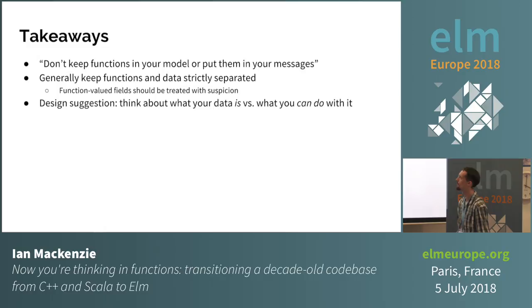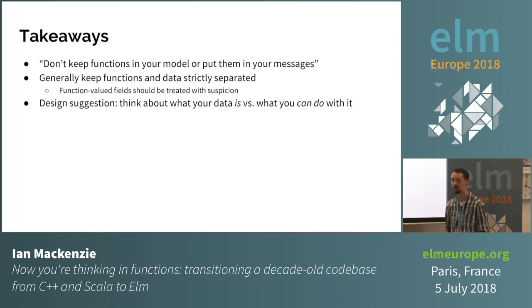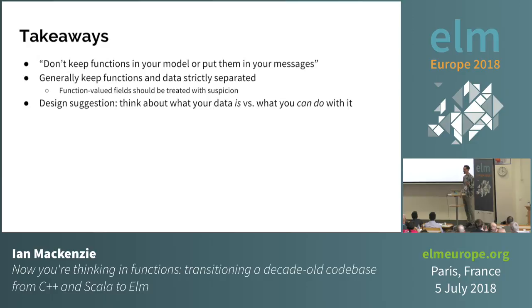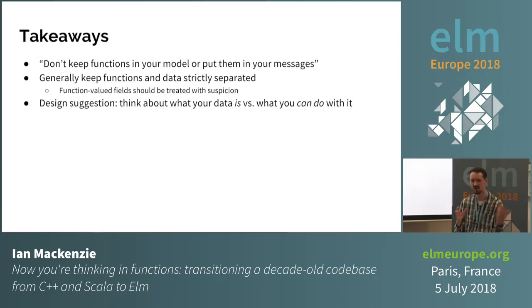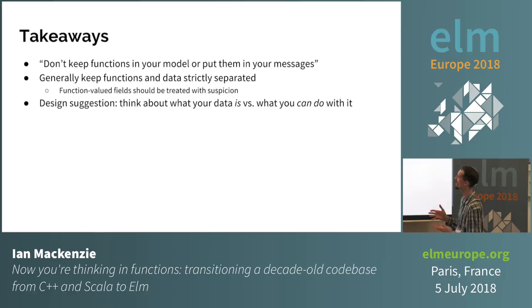A couple of takeaways. In the Elm community you'll often see the advice: don't keep functions in your model and don't put them in your messages. The separation matters: your model should represent what is the state of your application, your messages should represent what just happened, and functions are what you can do with a model to transform it in response to some message. Generally, keep functions and data strictly separated. Any time you have a record with a function as a field, that's sometimes useful but often kind of weird. Try to think about: what is this data fundamentally? And then completely separately: what can I do with it, how can I transform it, what operations are possible on it?